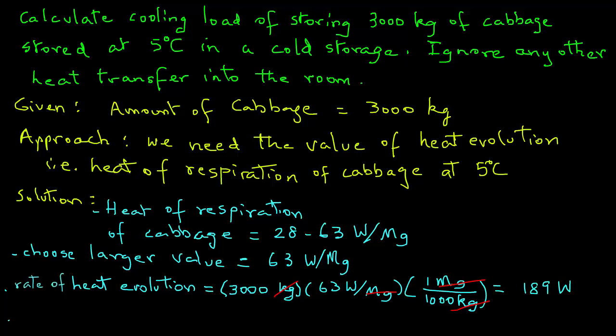So the cooling load for storing 3000 kilograms of cabbage in this room at 5 degrees C is equal to 189 watts. This example shows that if you were to consider only the product heat that is given off, that we must remove with our refrigeration system, then we must design our system with a cooling load of 189 watts.